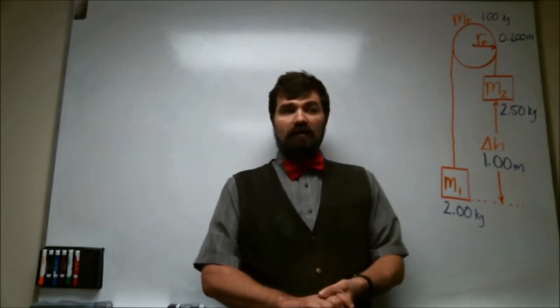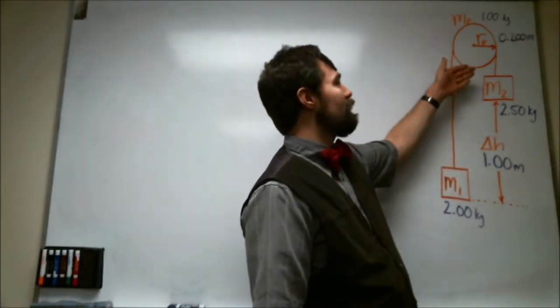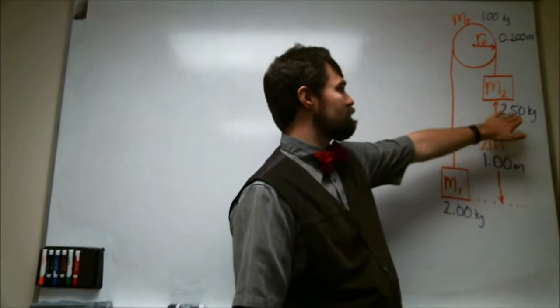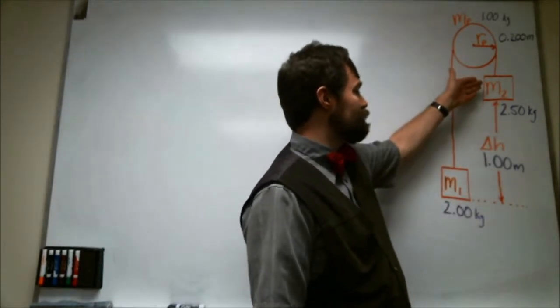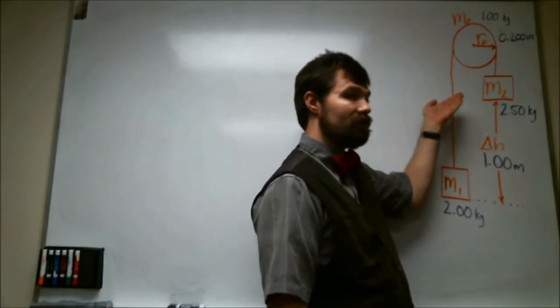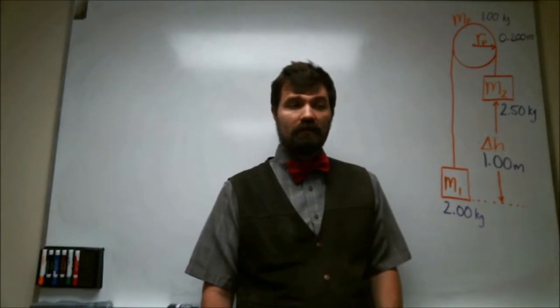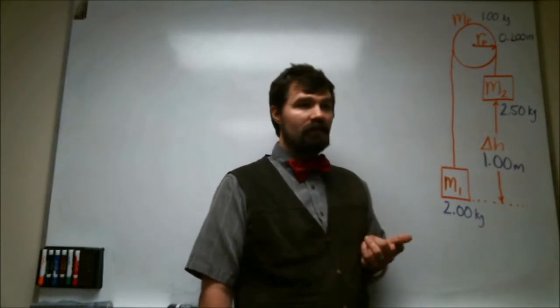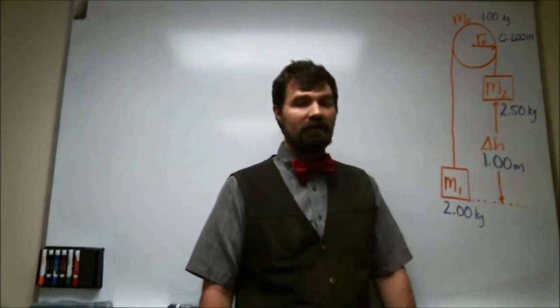So basically the question that is posed is: suppose we start with an Atwood's machine that looks like this, and suppose that the larger of the two masses is 2.5 kilograms, the smaller one is 2.0 kilograms. Suppose that we allow the larger of the two to fall a distance of one meter, and therefore the smaller of the two to rise a distance of one meter. In the case of the ideal Atwood's machine and eventually the real Atwood's machine, what kind of energy are we going to have for each component of the machine, and how fast is the final speed going to be after this motion?